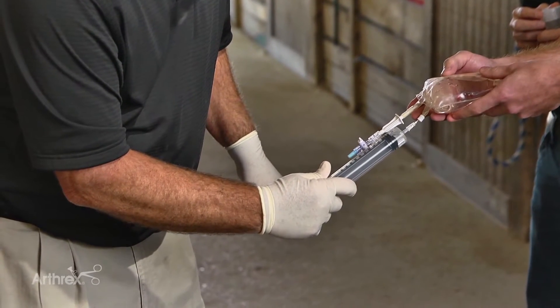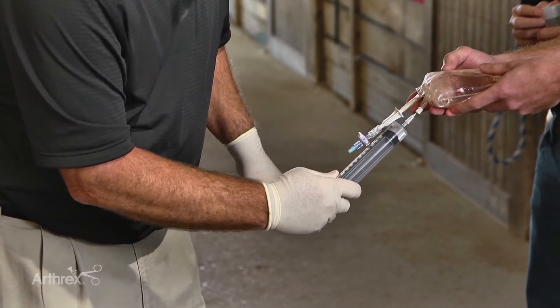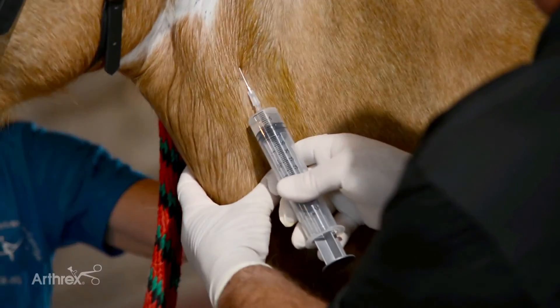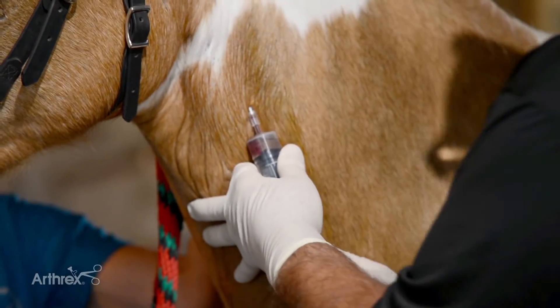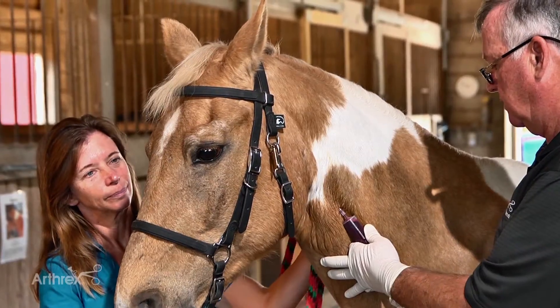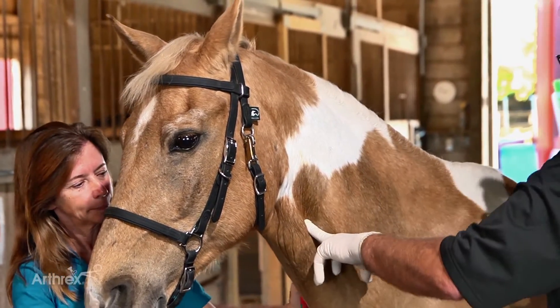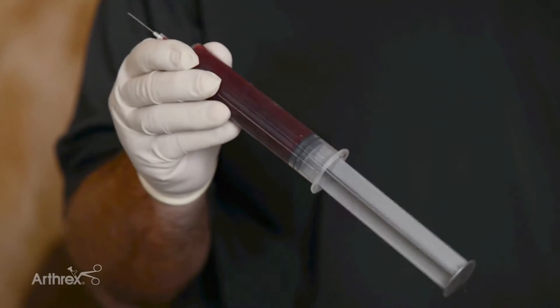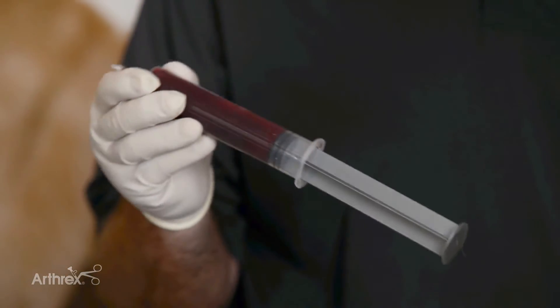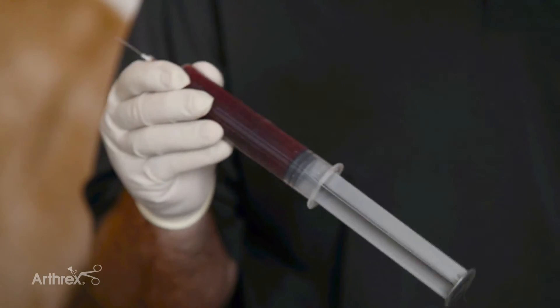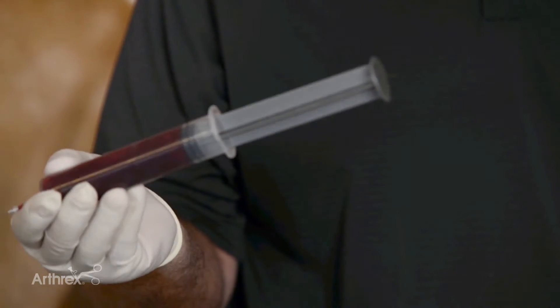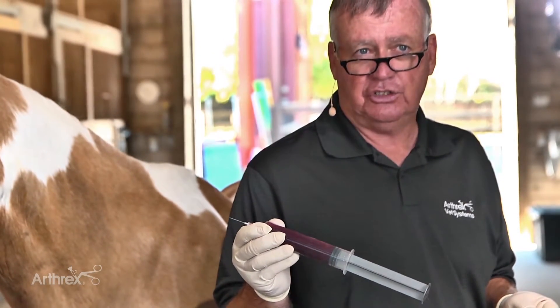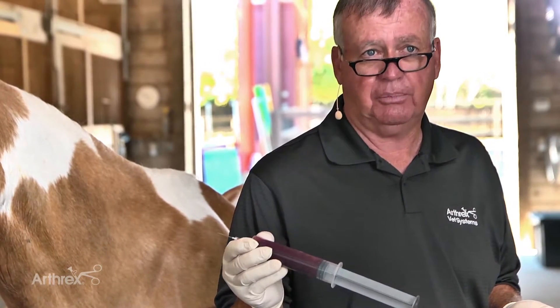So in this case we're going to do 8 cc's. So we're going to do 60 mL's of blood today. What I'd like to do is after we take the whole blood, we want to invert the syringe several times to make sure that we get the ACDA mixed up with the blood properly. After this we go ahead and inject this into the Angel apparatus.